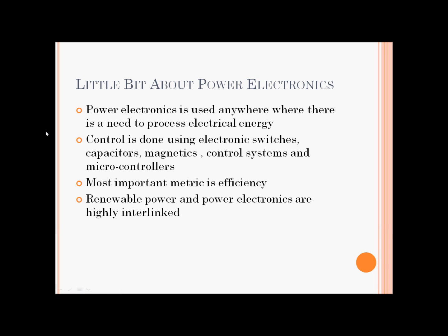A little bit about power electronics. Power electronics is used anywhere where there is a need to process electrical energy. For example, it is used in your laptops when the power coming from the outlet is AC voltage. The inverter converts this power into a DC voltage so your batteries can be charged. They are also in your mobile phones and other places like HVDC links that connect underground from one end of the city to a different city, like Vancouver to Victoria. So power electronics is everywhere.